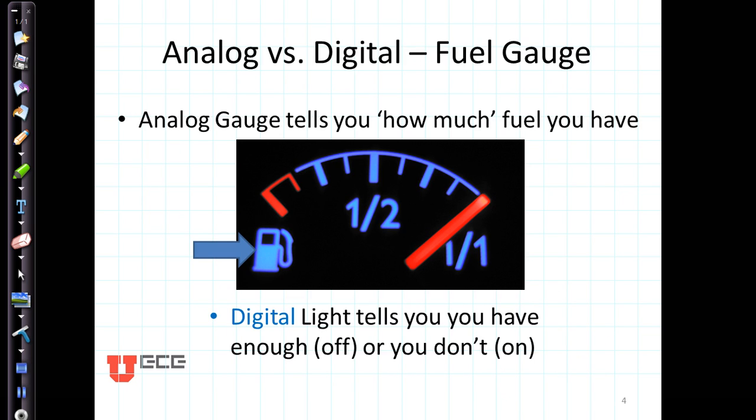Let's think of a fuel gauge for instance. The analog gauge, the circle across the top tells you how much fuel you have. You have a full tank or a half a tank or a little more than a half a tank of gas. But when you're just about ready to run out the digital light turns on to tell you that you either don't have enough when the light is on or that you do when the light is off. There are two choices. You either have enough fuel or you don't.